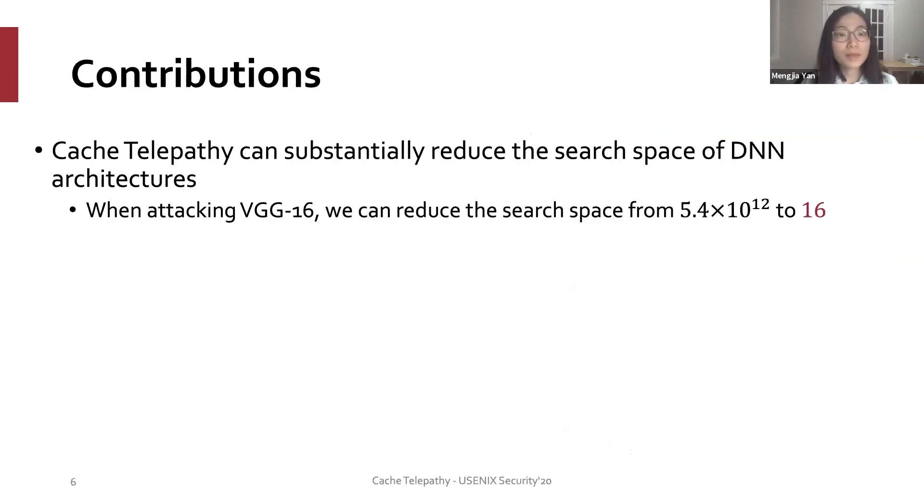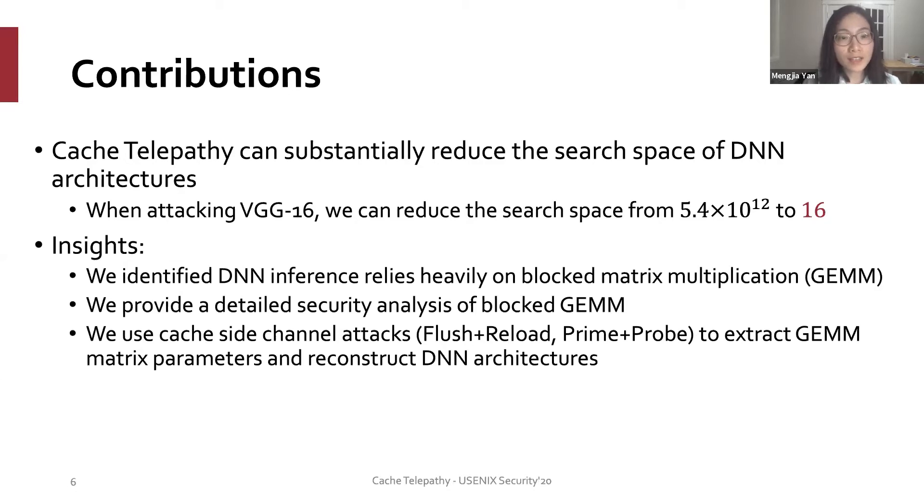In this paper, we have made the following contributions. Cache telepathy can substantially reduce the search space of DNN architectures. For example, when attacking VGG16, we can reduce the search space from 5 trillion to just 16 architectures. Cache telepathy is based on the following insights.